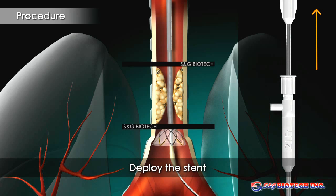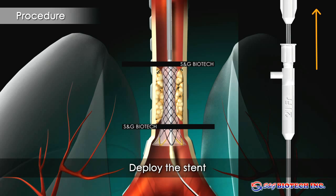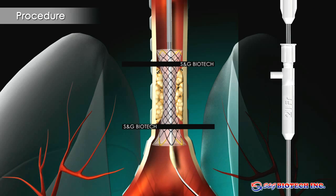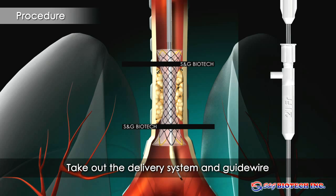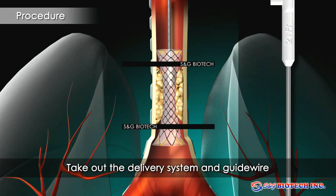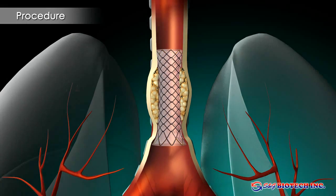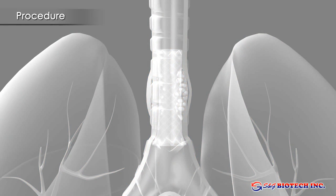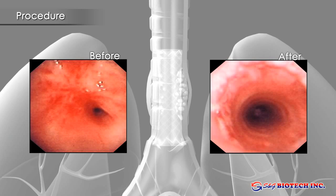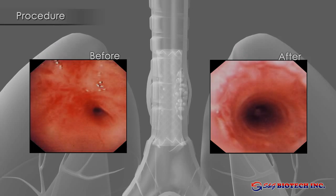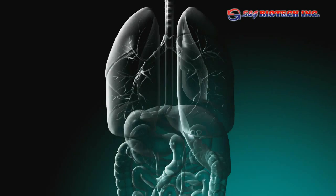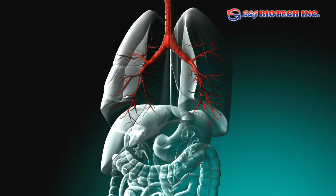Deploy the stent. Choose the stent length to exceed the length of the stricture by 1 to 2 cm. Take out the delivery system and guide wire.